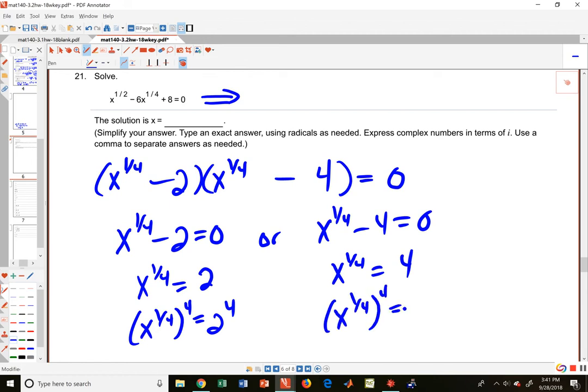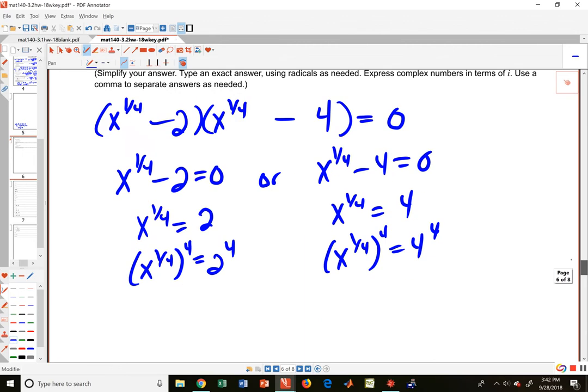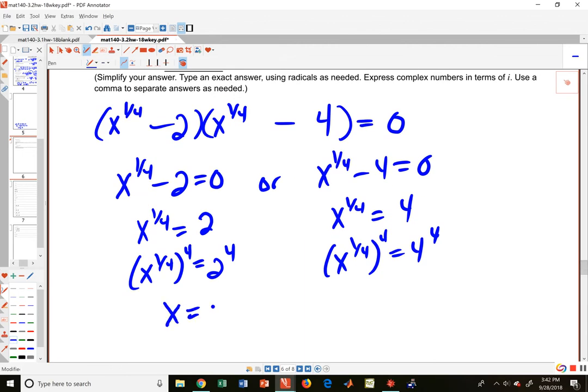This is a quarter equals four—you raise both sides to the fourth power, and I think we've got our answers here. So x equals 16, and x equals—well, four to the four, what is that? That is 16 times 16. I think we're looking at 256.